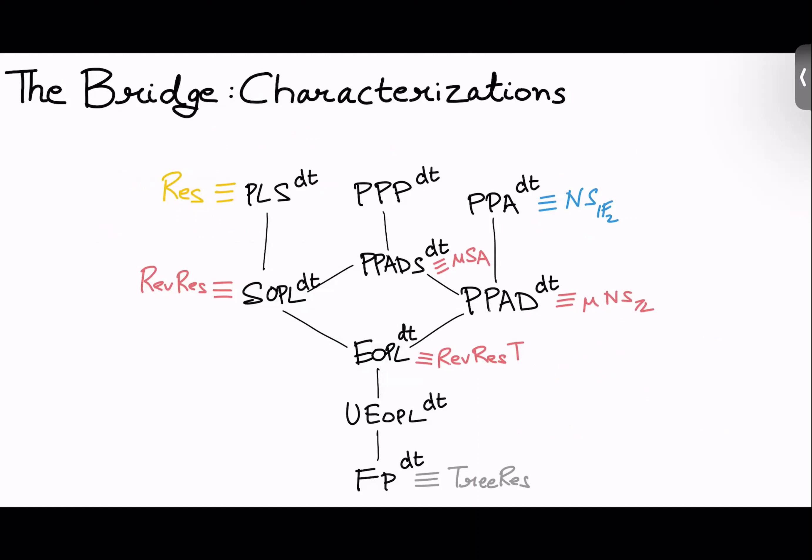But I won't be telling you about this first work. It's more dated. So, this is the final picture. I squished the two hierarchies together. The things in yellow and blue were known before. Resolution equivalent to PLS is, I think, folklore. And null-sensatz over F2, equivalent to PPA, is a result from this ITCS paper from a few years ago, which me and Robert were also coauthors. So, not only that, PPADS is equivalent to unary Sherali-Adams. PPAD is equivalent to unary null-sensatz. We define a new proof system we call reversible resolution, which captures SOPL, and a version of that proof system with terminus captures EOPL. And again, FP is just tree-like resolution. This is, again, folklore.